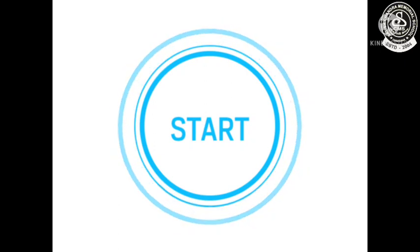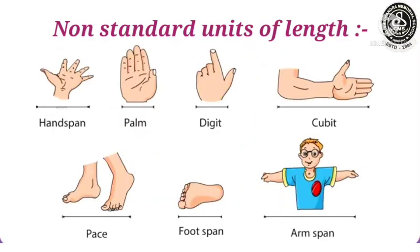In the last class we learned about non-standard units of length: hand span, palm, digit, cubits, and so many others. But children, you know these units are not accurate because all of us have different sizes of hand span, cubit, and pace.